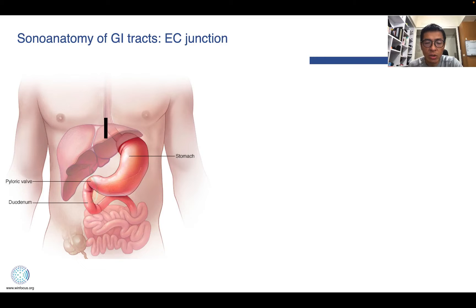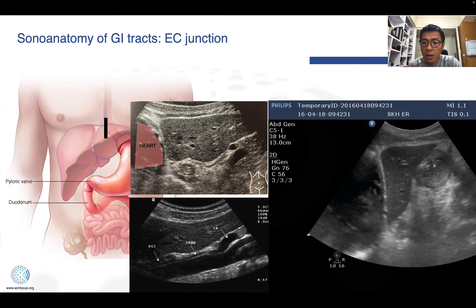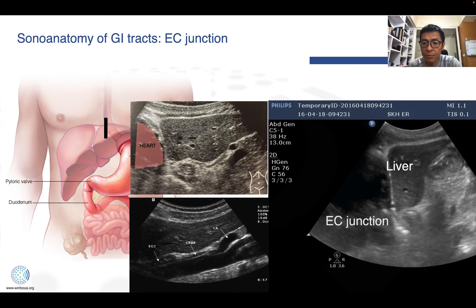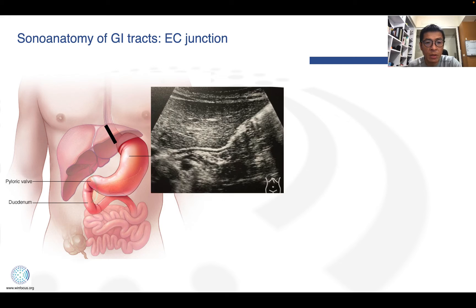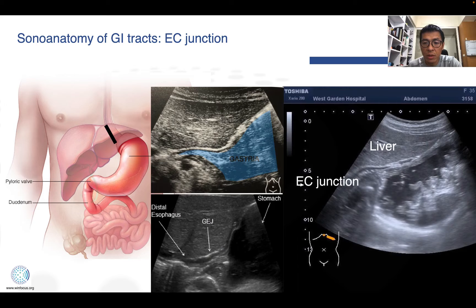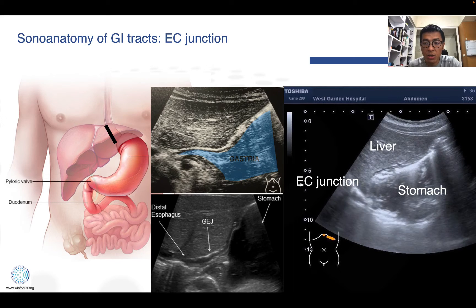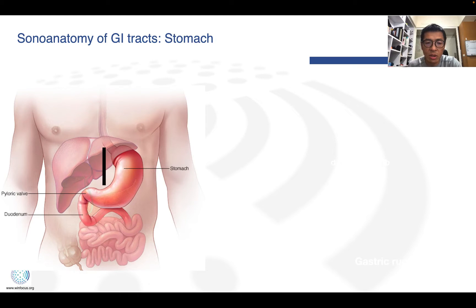Next, we go to the EC junction. Because the thoracic part of the esophagus is difficult to observe from outside the body, we put our transducer over the xiphoid process and use the liver as a window to observe the EC junction. Sometimes we can see the pylorus — tilt the transducer a little bit. We can use the liver as a window to observe the EC junction and stomach, especially when the stomach is distended. It is a good window to observe the stomach.